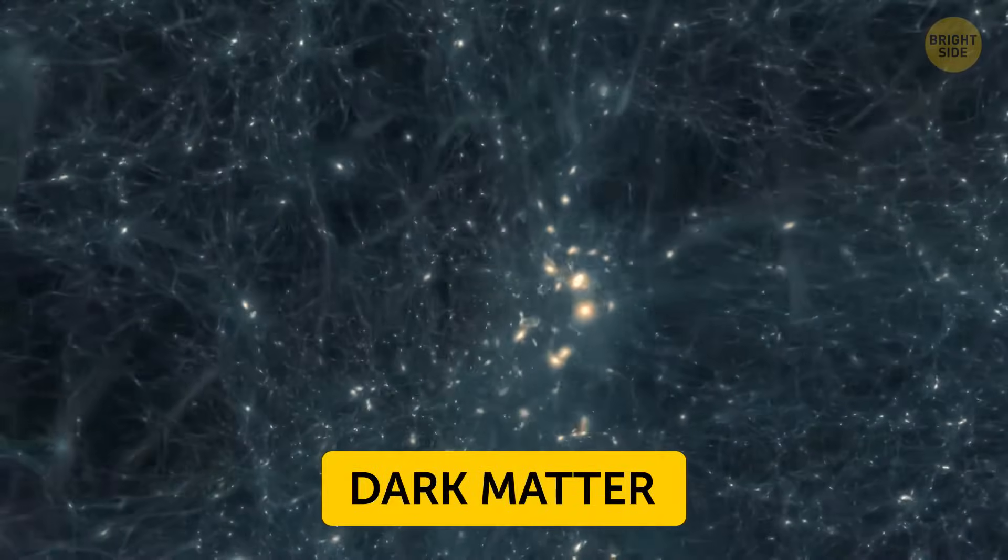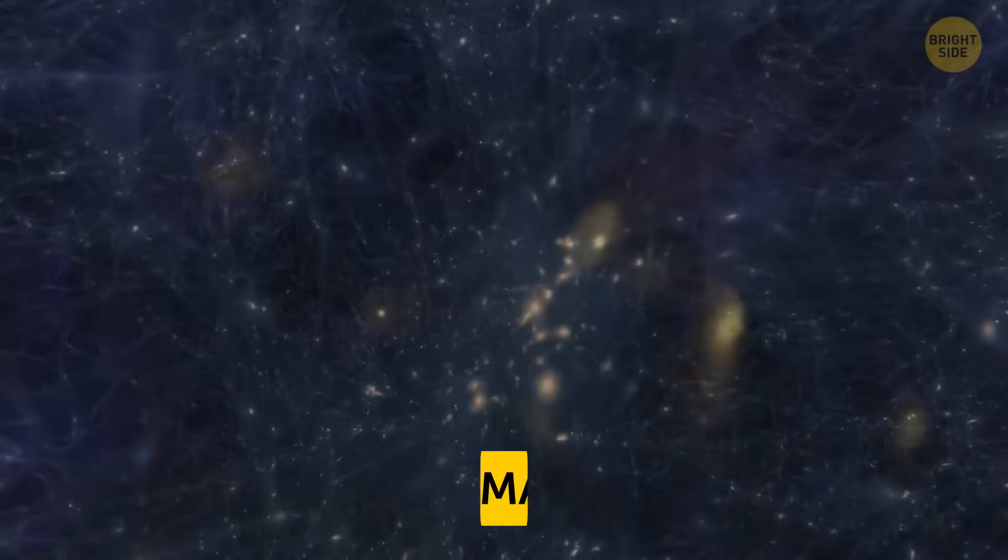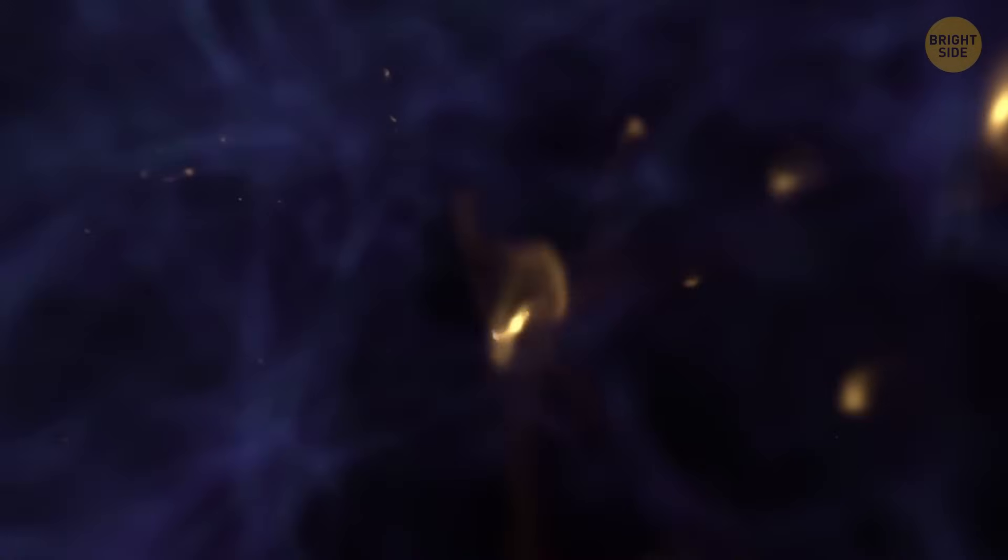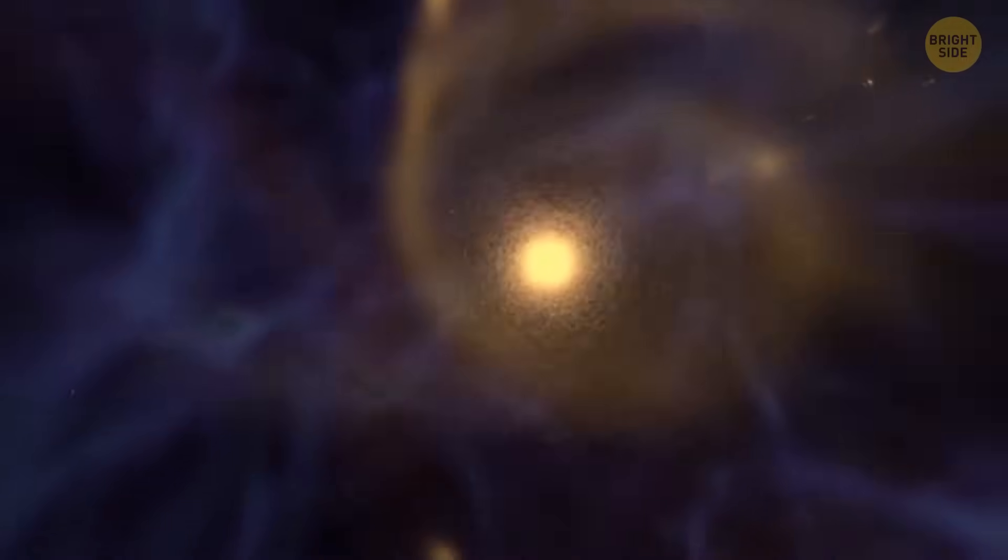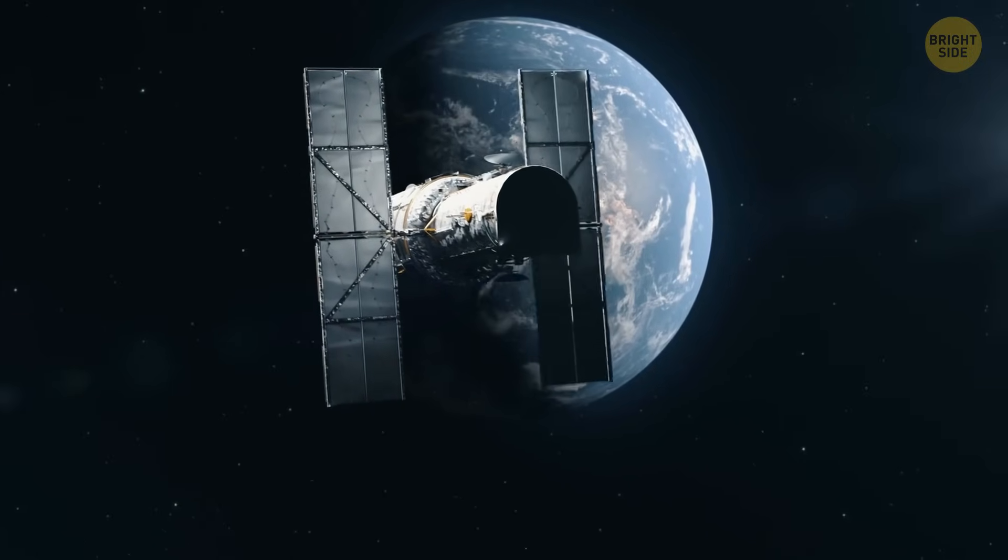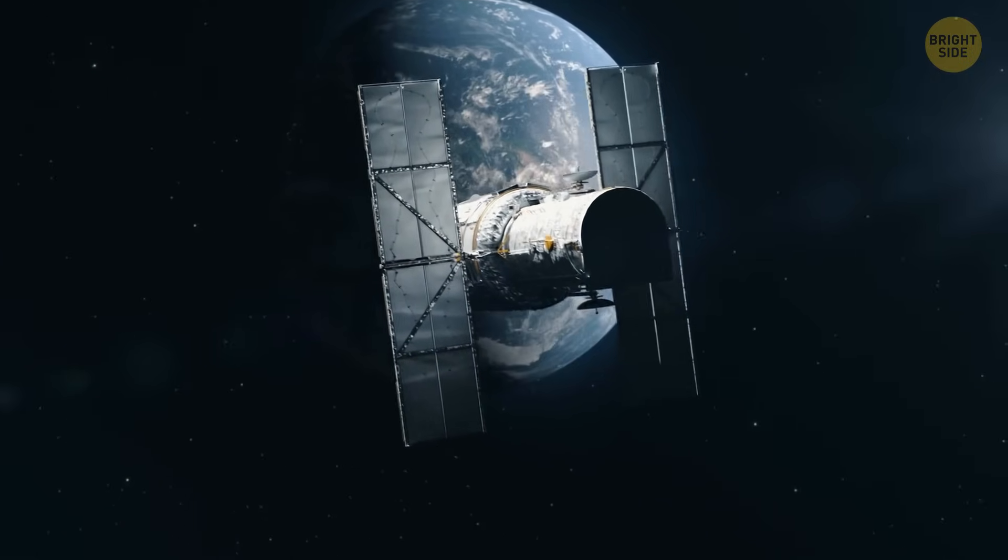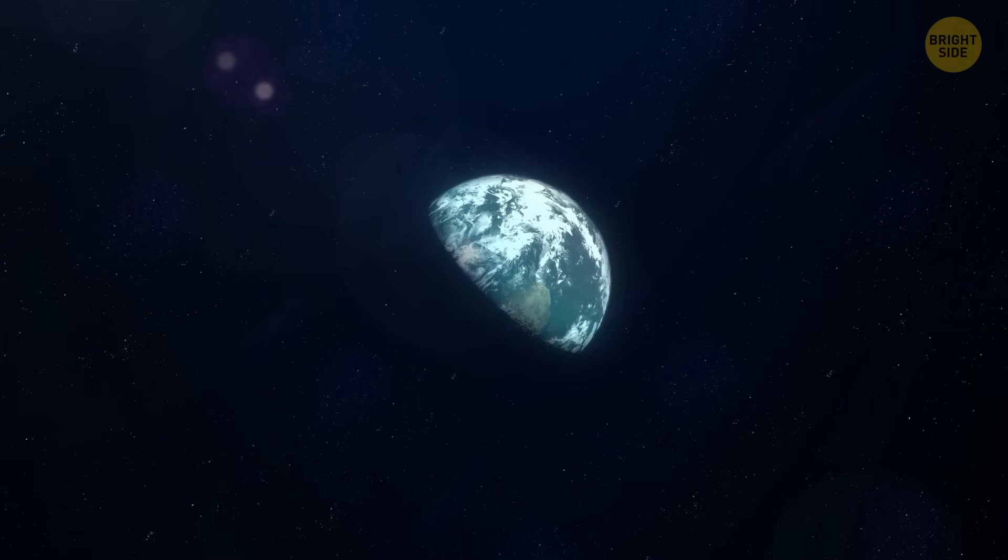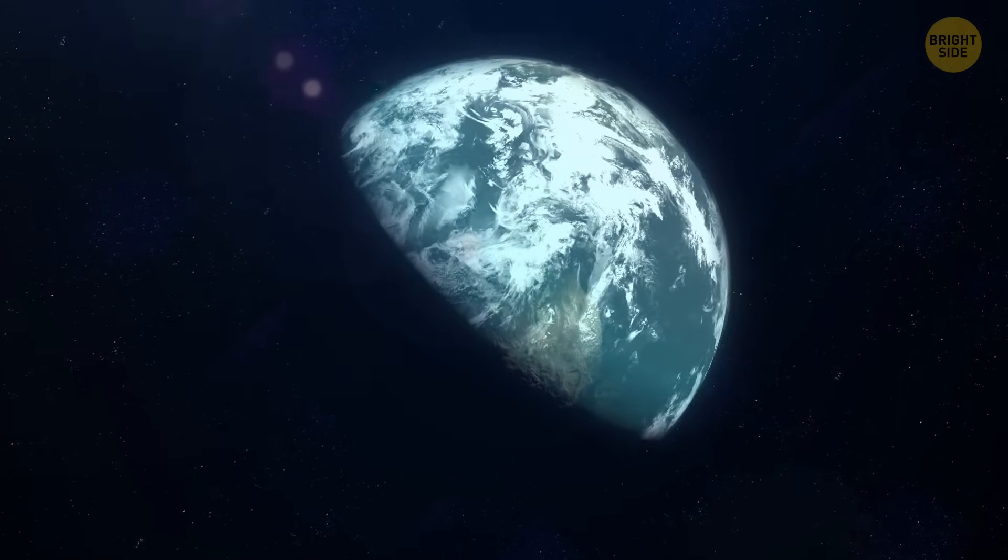Dark matter is an invisible type of matter. It plays a huge role in creating our world. Like sticky glue, it helps entire galaxies come together, grow into enormous cosmic structures, and rotate. Unfortunately, it's impossible for us to study it properly because we haven't managed to detect it yet. But recently, a new idea appeared that might help us finally catch this secret Pokemon.